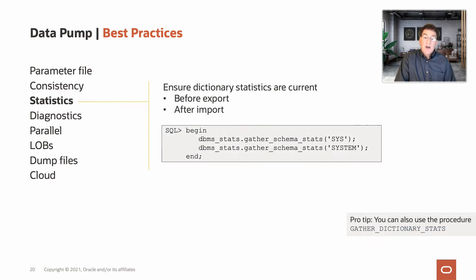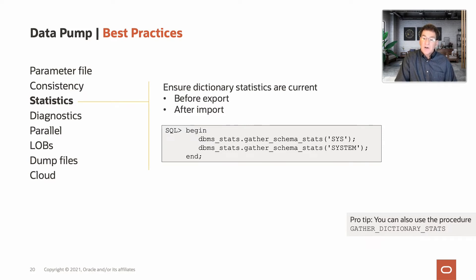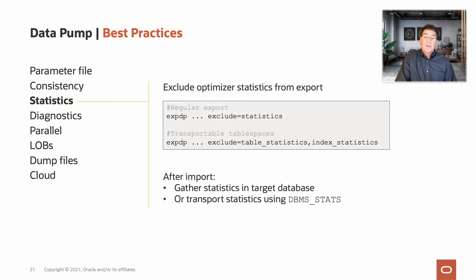It's important to have current dictionary statistics — we often see performance issues reported where the root cause was stale and inaccurate statistics. Similarly, it's important to collect statistics immediately after import. We recommend gathering schema statistics because it will gather statistics on all objects regardless of the staleness information. We also recommend excluding statistics from the export job to improve performance; alternatively, you can transport those statistics with the dbms_stats package.